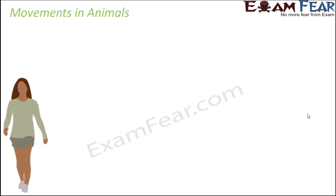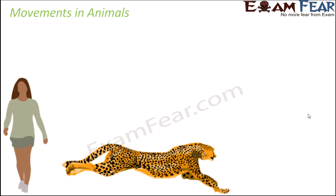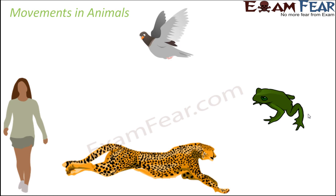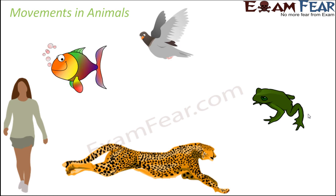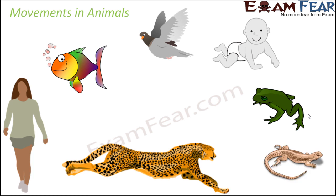Now when you talk about movements, a lot of things come to our mind. We are able to walk, we can run, we can jump. Different animals have different movements. A cheetah can run really, really fast. A frog can jump and hop. A bird can fly. Fish can swim. Babies crawl. So all are different types of movements.